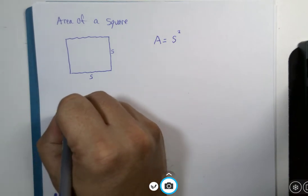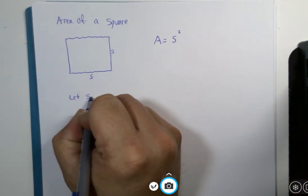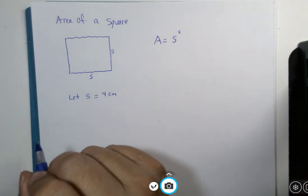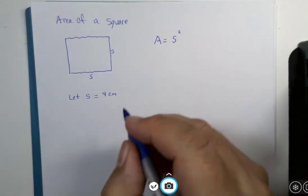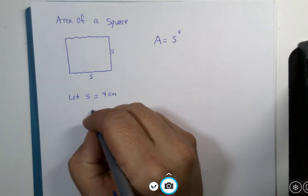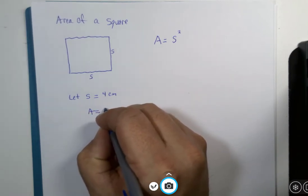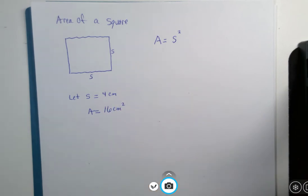Let's suppose that we let s equal 4 centimeters. That would be the side of the square. So then we would know the area would be 4 times 4, which would be 16 square centimeters.